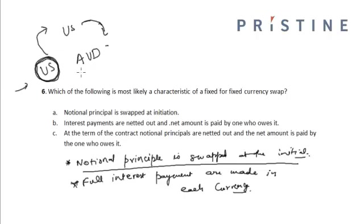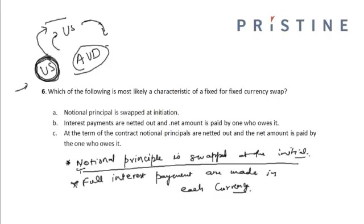The American who received the Australian dollars will pay the interest on Australian dollars to the counterparty. Similarly, the party which received the US dollars will pay the interest on the US dollars to the counterparty. Hence, the full interest payments are made in each currency, and the interest payments are not netted out.